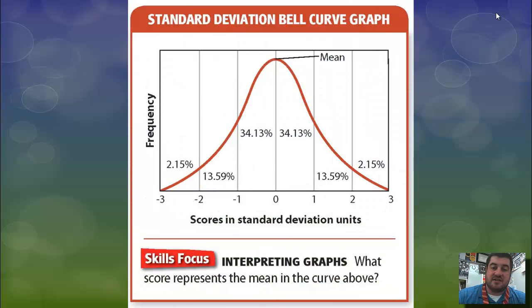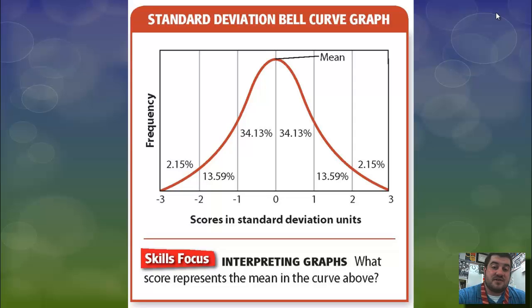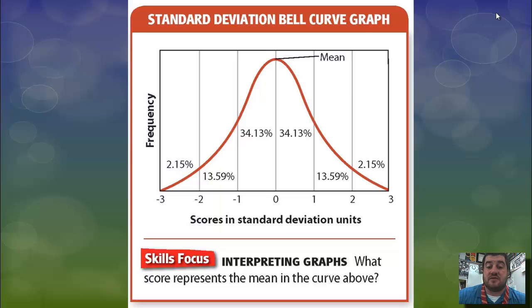Let me show you what I'm talking about with standard deviation units. You can see plus one, plus two, negative one, and negative two — all equal units on either side. 34.13% of scores fall within the first standard deviation unit, and 13.59% fall in the second. That is the standard deviation bell curve graph.